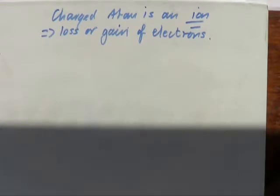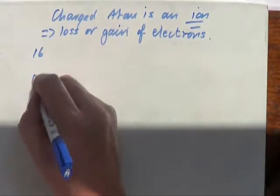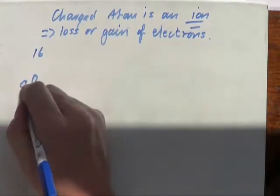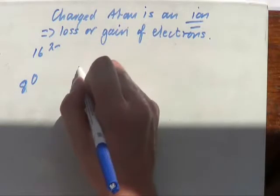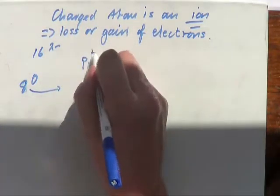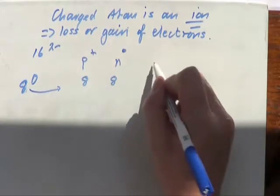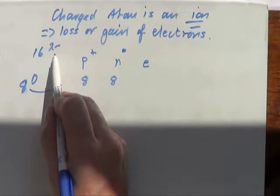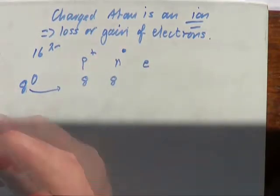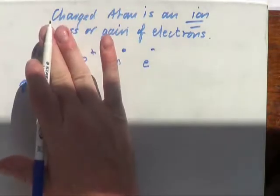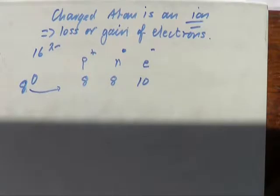Let's look at oxygen this time with a 2− charge. The proton number tells us the number of protons, so protons in here is eight, and neutrons are 16 minus 8 which is eight. Our electrons this time — it has a 2− charge which it can only get by gaining electrons. It must have originally started with eight protons and eight electrons, and now being 2−, it must have gained two electrons, so the electron number must be ten.